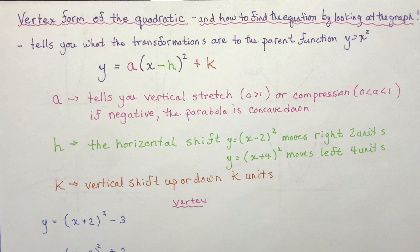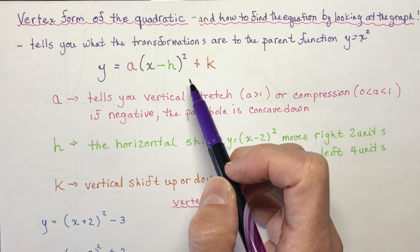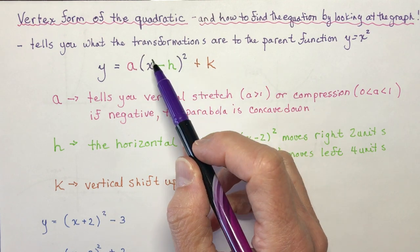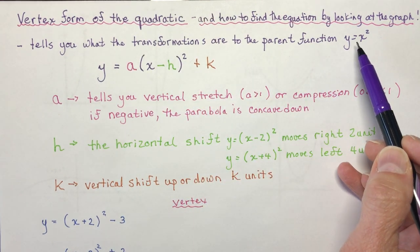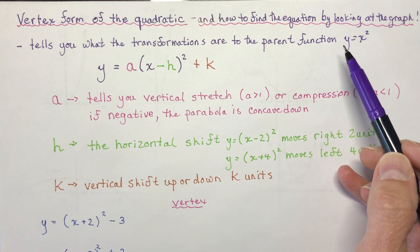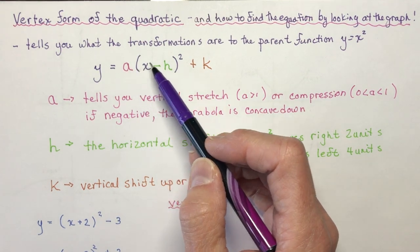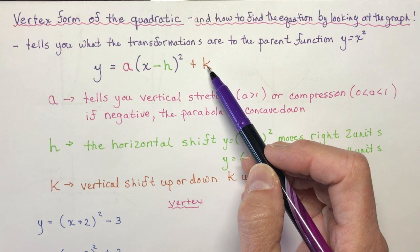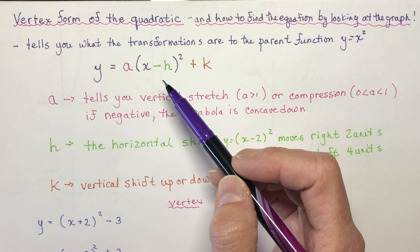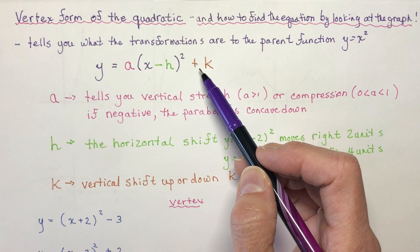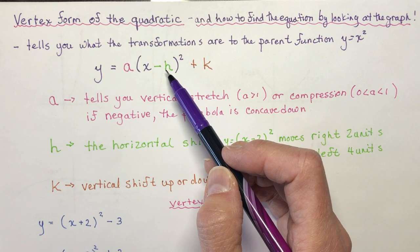Going back over what we did yesterday, the equation is y equals a times x minus h squared plus k. If you remove the transformations and just look at the basic graph, you'd have y equals x squared — that is the parent function, or the most basic equation for a quadratic. The h and k affect the y values of your coordinates, while h affects the x values, so changes outside the bracket affect y and inside the bracket affect x.